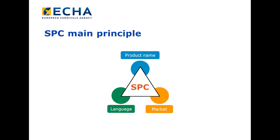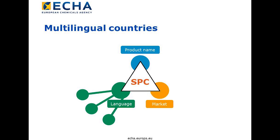An SPC is defined by the unique combination of product name, market, and language. That means for the same legal entity, there cannot be more than one SPC for the same product formulation in the same market area and with the same language. From summer 2015, the SPC editor will be available in all EU languages as well as in Norwegian.